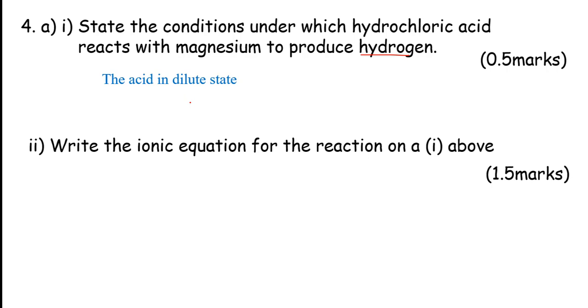Write the ionic equation for the reaction in A above. They want us to write ionic equation. We have to first come up with the overall equation where we have our hydrochloric acid reacting with our magnesium to produce our magnesium chloride, the salt, which is obviously soluble in water plus our hydrogen gas.